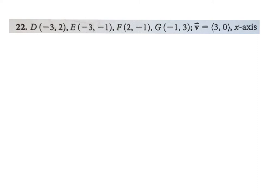We have a translation of (3, 0) and a reflection across the x-axis. What is the (3, 0) going to do to all of your points? It's going to move them 3. How do you calculate your new coordinates? Take your x's and add 3 to all of them. The 0 doesn't affect your y at all — y plus 0 is just y.